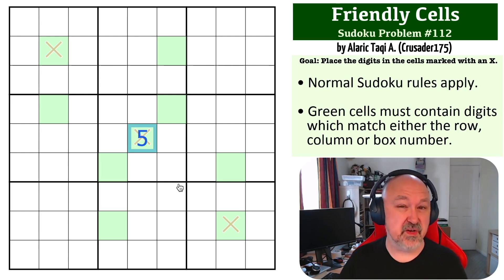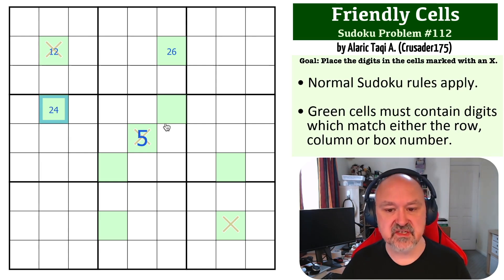Now often with friendly cells what you want to do is mark what the candidates are. This cell is in box 1, row 2, column 2, so it can only be 1 or 2. This cell is in box 2, row 2, column 6, so this can only be 2 or 6. This cell is in row 4 and box 4 but also column 2, so this is 2 or 4.